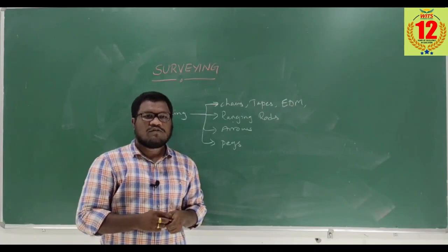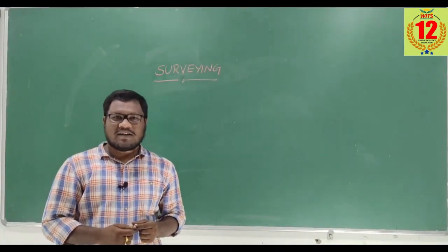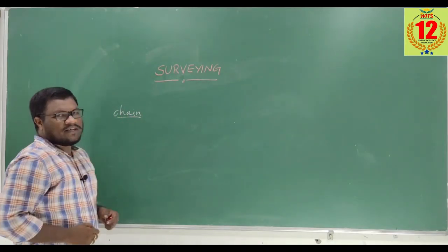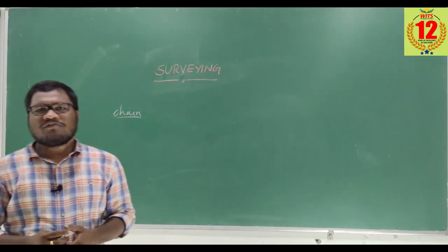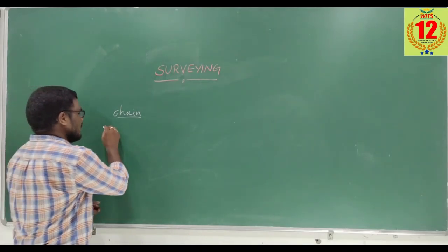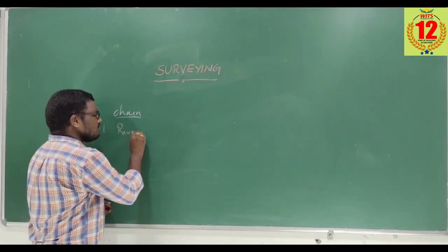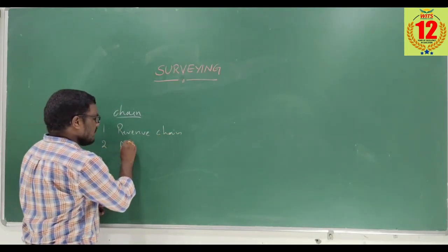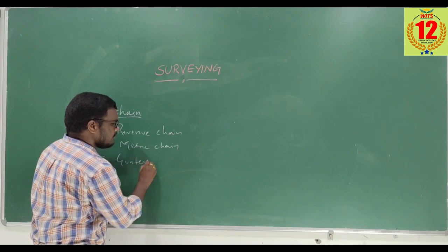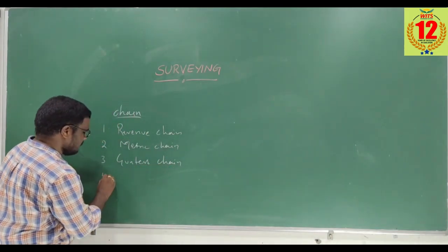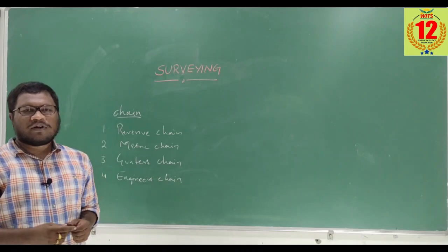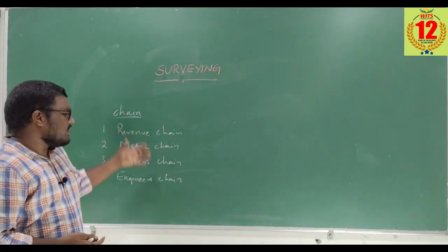Now let us discuss chain surveying. The main instrument used in chain surveying is a chain, which is made up of mild steel material. Using this chain, we measure the distance between two points or stations. The four different types of chains available are: revenue chain, metric chain, Gunter's chain, and engineer's chain.